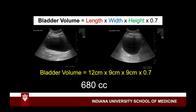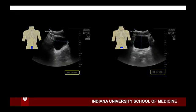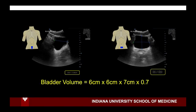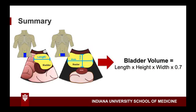Let's do this one more time. In this patient, you obtain the length of the bladder first in the sagittal orientation, which you rounded up to 6 centimeters. Then you obtain the height and width in the transverse orientation. After rounding, you use 6 centimeters for the height and 7 centimeters for the width. We get out our calculator and plug these numbers into our bladder volume equation: 6 centimeters by 6 centimeters by 7 centimeters times our correction factor of 0.7, giving us 176 cc of urine. Voila! Pretty simple.